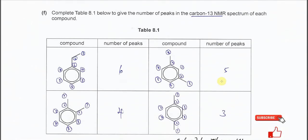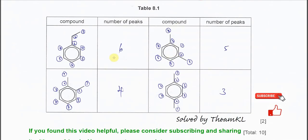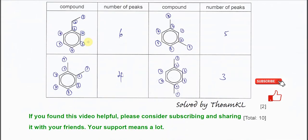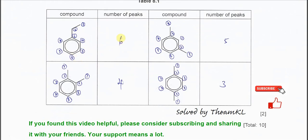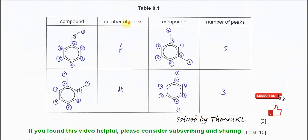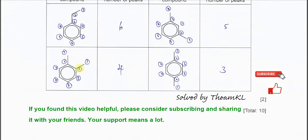Part F: complete Table 8.1 giving the number of peaks in the carbon-13 NMR for these four compounds. For the first compound, count the carbons: 1, 2, 3, 4 — these two carbons are equivalent so counted as one — 5, and 6. Therefore it produces six signals or six peaks.